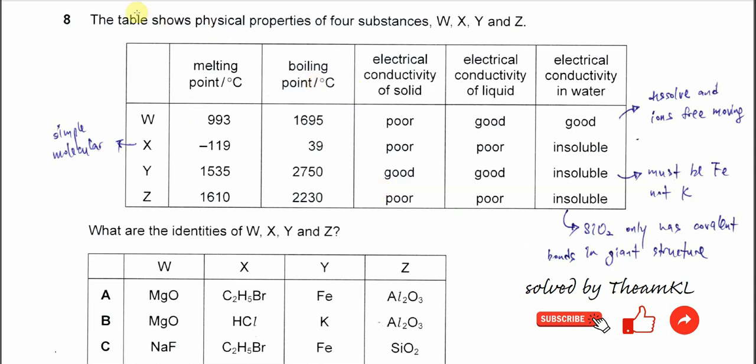Question A. The table shows physical properties of four substances W, X, Y, Z. The physical properties are melting point, boiling point, electrical conductivity of solid, liquid in water.